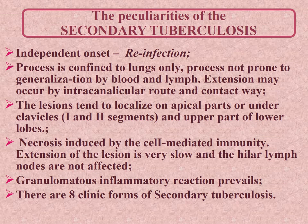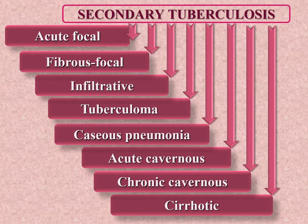There are eight clinical forms of secondary tuberculosis, each representing a phase in development: acute focal tuberculosis, fibrous focal tuberculosis, infiltrative tuberculosis, tuberculoma, caseous pneumonia, acute cavernous tuberculosis, chronic cavernous tuberculosis, and cirrhotic tuberculosis.